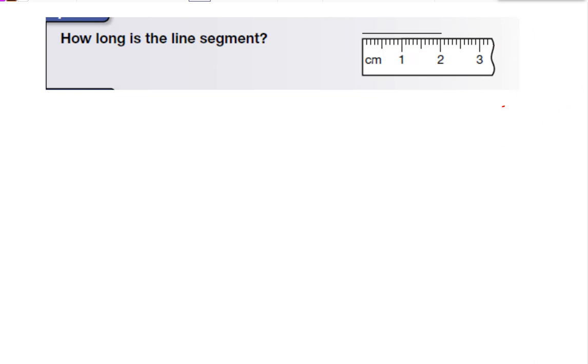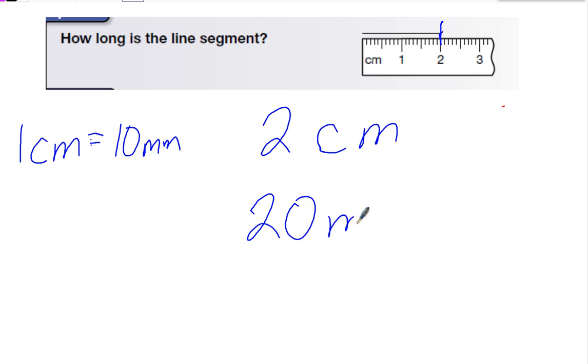So, on this one, I can look and I can measure it two ways. The first way is the line goes right to the 2. So, that means that it is 22 centimeters. Now, I know that 1 centimeter equals 10 millimeters, right? So, 2 centimeters is going to equal 20 millimeters.